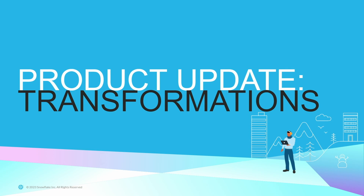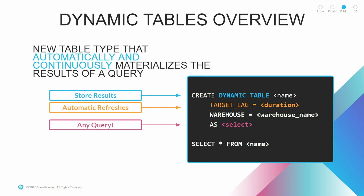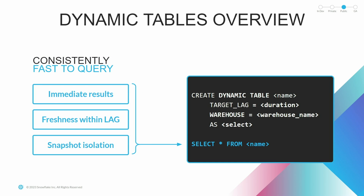Next, we'll go into transformations with dynamic tables. Dynamic tables is a new table type, now in public preview, where it can continuously and automatically materialize the results of a query. You create a dynamic table, choose your lag for automatic freshness — as low as one minute or whatever you choose — and you choose any query: joins, flattens, window functions. Best of all, dynamic tables do an incremental refresh on your data. Only when data needs to be refreshed does your dynamic table run — if there's nothing to do, dynamic tables won't be charged. It's an on-demand model.